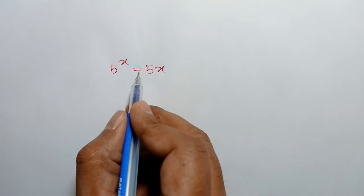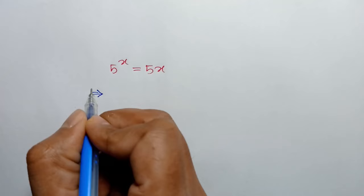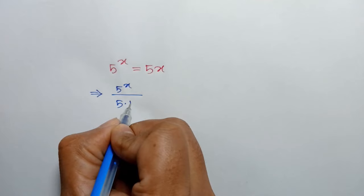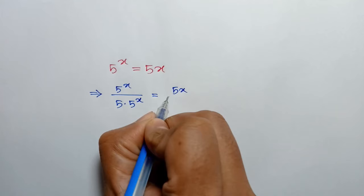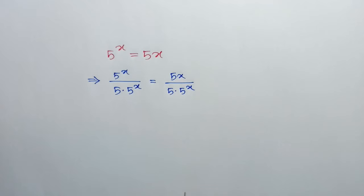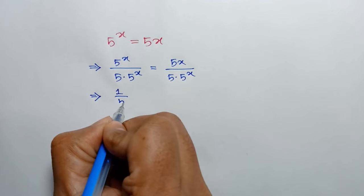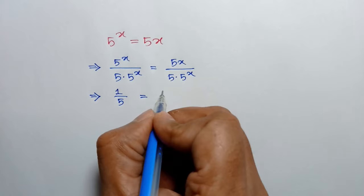Dividing both sides by 5 times 5 to the power x, we can write 5 to the power x over 5 times 5 to the power x is equal to 5x over 5 times 5 to the power x. The 5 to the power x terms cancel, leaving 1 over 5 on the left, and 5 cancels on the right, leaving x over 5 to the power x.